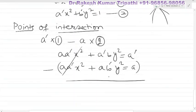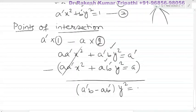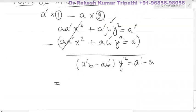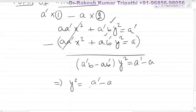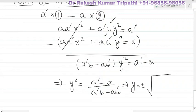From the remaining terms, y² can be taken as common. It becomes (a'b − ab')·y² = a' − a, and therefore y² = (a' − a) / (a'b − ab'). This implies y = ± √[(a' − a) / (a'b − ab')]. This is the value of y. Now to find the value of x, we shall again use the elimination method.